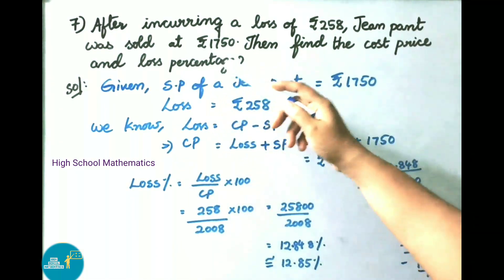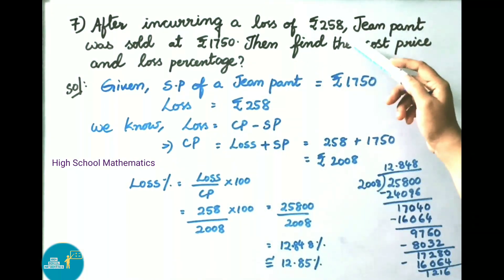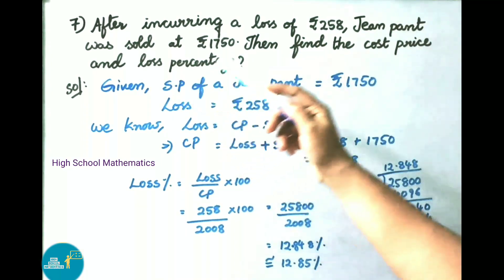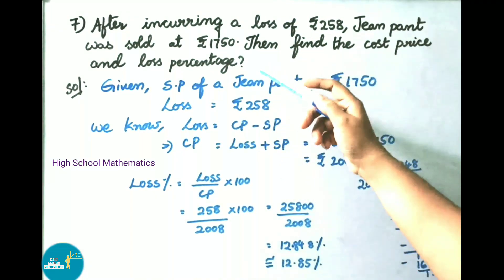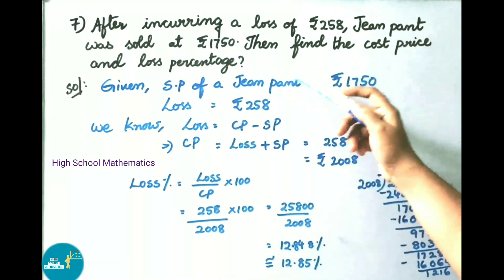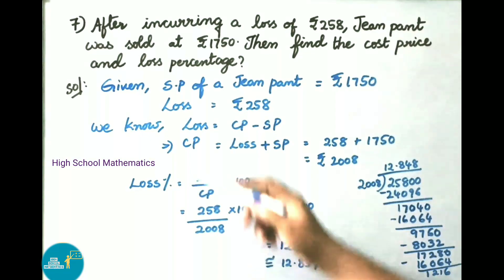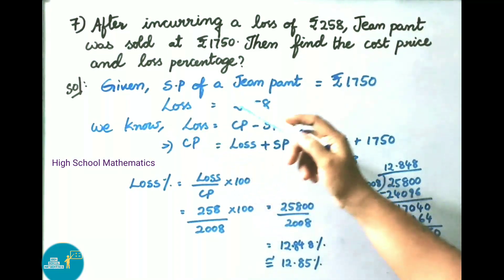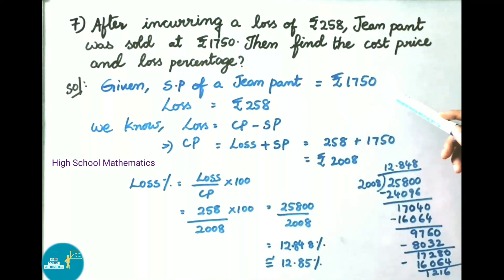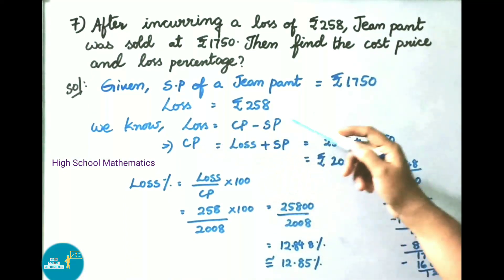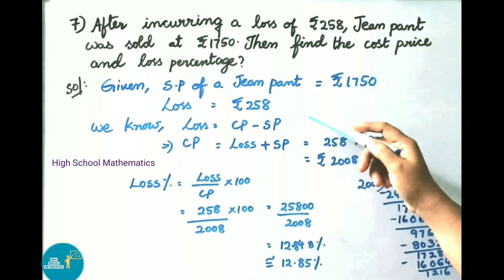Question number 7: After incurring a loss of 258 rupees, a jean pant was sold at 1750 rupees. Find the cost price and loss percentage. Solution: given selling price of jean pant is 1750 rupees and loss is 258 rupees.